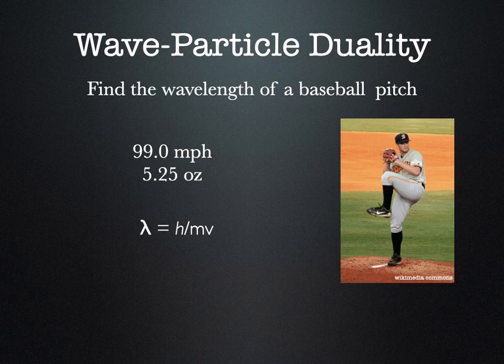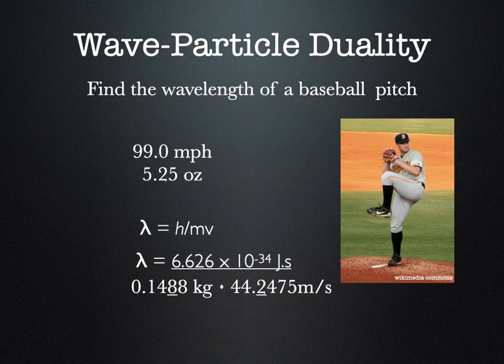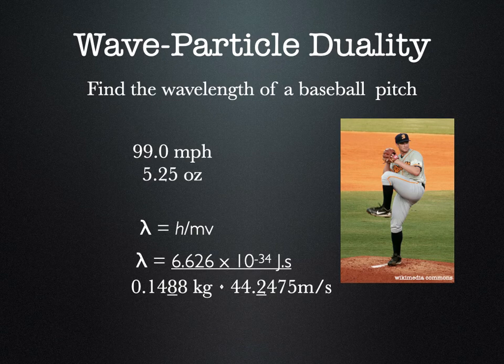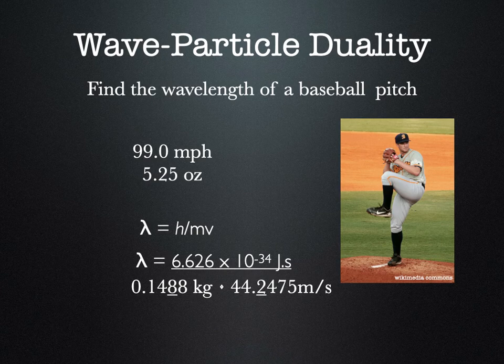Hopefully you paused and did some work. We have Planck's constant on top, then the mass of the baseball in kilograms. We started with three significant digits in our mass, and I've written four but underlined the third significant digit so we don't round until the end. The same thing applies to the velocity — now in meters per second with extra digits from the calculator, but the third significant digit is underlined. Multiplying Planck's constant on top and dividing by both the mass and velocity on the bottom gives a wavelength of 1.01 times 10 to the negative 34th meters.